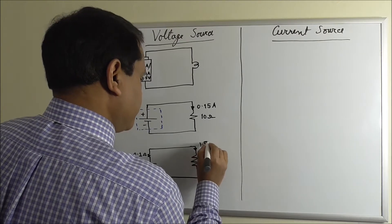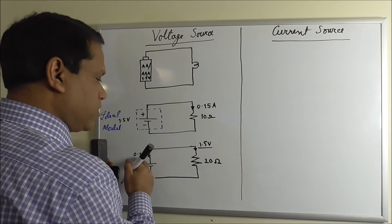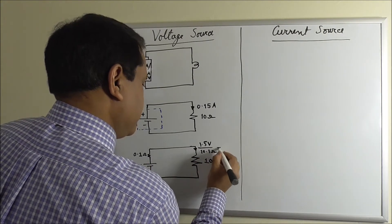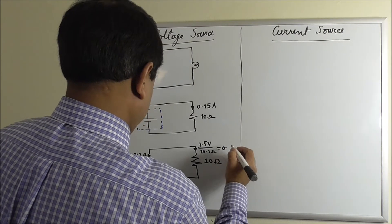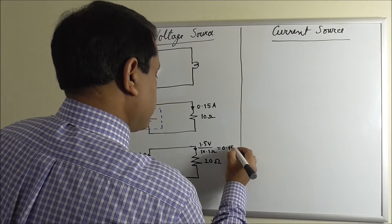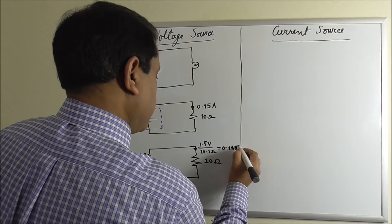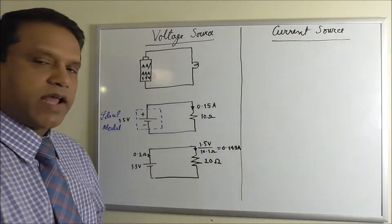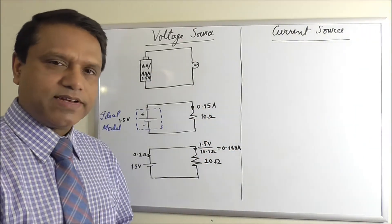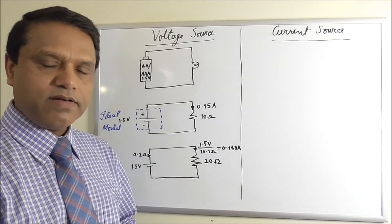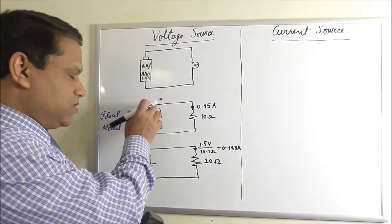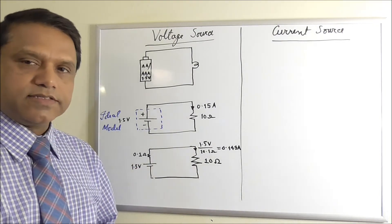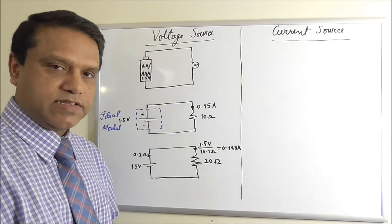1.5 volt over 0.1 plus 10, so the current is actually 0.149 ampere, which is just a bit less than 0.15 ampere that we got when we assume this is an ideal battery. With a practical battery, the current is reduced because there is an internal resistance.